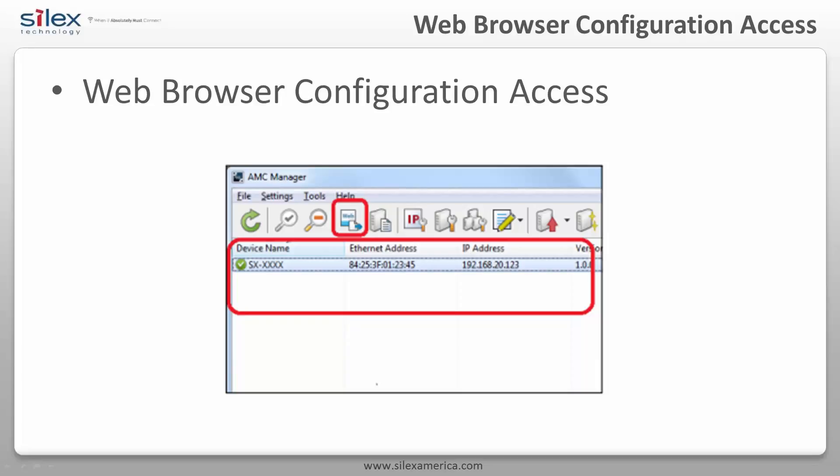You can also configure Silex devices with the web browser interface, which is easy to access from the AMC Manager software. Just select a device from the list in AMC Manager and click the Configure Using Web Browser icon from the toolbar. It will launch the built-in web server of the Silex product using the default web browser on your computer.